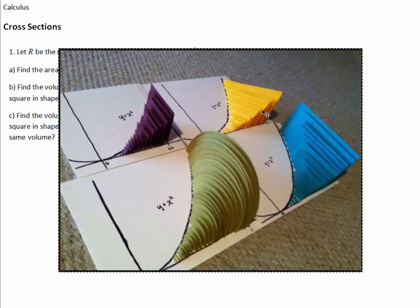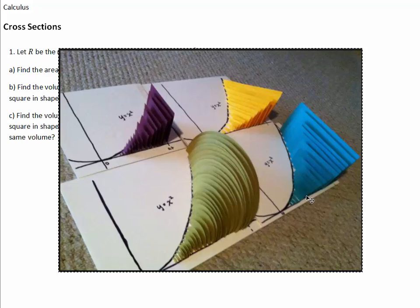Over here it looks like we have isosceles right triangles with a leg in that region. These two are kind of hard to tell exactly what they are. These ones look like rectangles, probably with one edge — we'll call it the width — in the region, and then the height maybe two times the width, or maybe they're squares. The other ones look more like rectangles with the height maybe half the width.